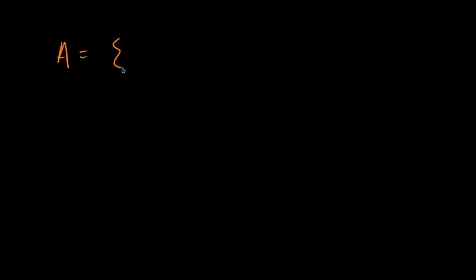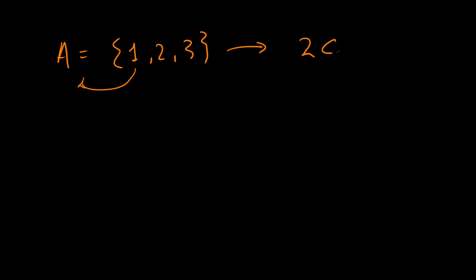Let's say A = {1, 2, 3, ...}. Can we say that one belongs to A? Yes — one is an element of A, two is an element of A, meaning two belongs to A. We can write that using mathematical notation: the symbol ∈ means 'belongs to.'